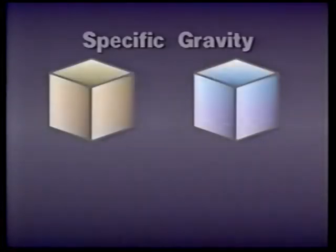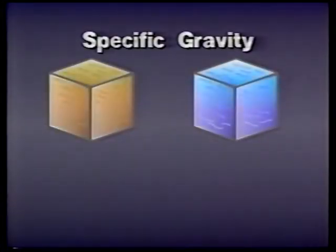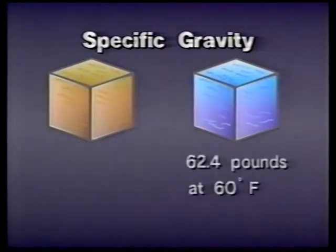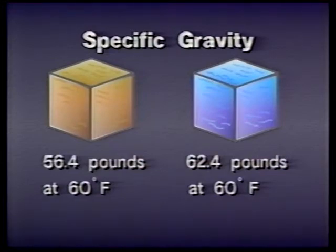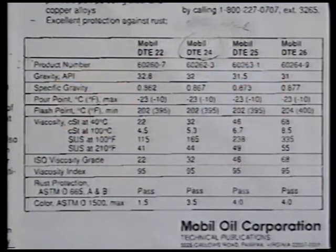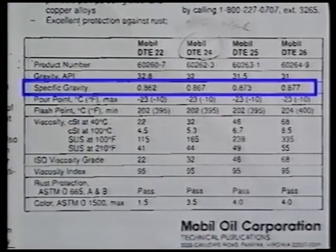A fluid's specific gravity is a comparison of the weight of one cubic foot of the fluid to one cubic foot of water. A cubic foot of water weighs 62.4 pounds at 60 degrees Fahrenheit. An equal amount of a commonly used petroleum-based hydraulic fluid weighs 56.4 pounds at the same temperature. If we divide the oil's weight by the weight of the water, we get the specific gravity of the oil.